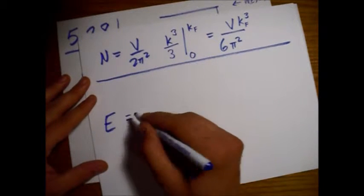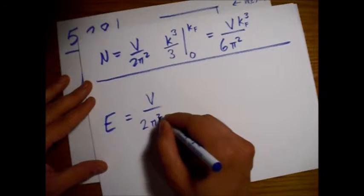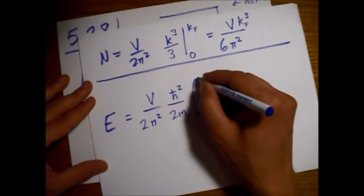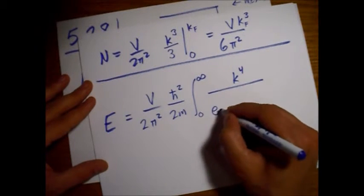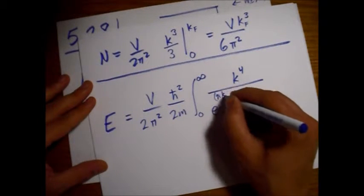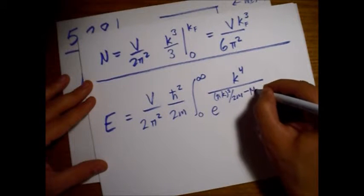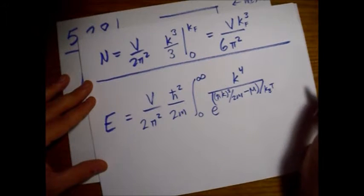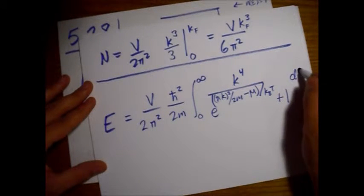This integral that we'll be doing is energy. V over 2 pi squared, H bar squared over 2m. We're going to go from zero to infinity. This time we have a k to the fourth power. And then we have our big, we'll be writing all of this out. So H bar k quantity squared over 2m, that's our epsilon, or that's our kinetic energy, minus mu our chemical potential, divided by kVt. And then again, a plus 1 for fermions.